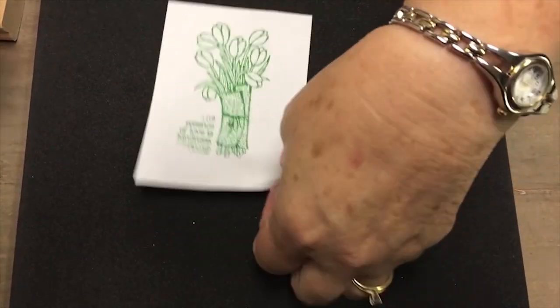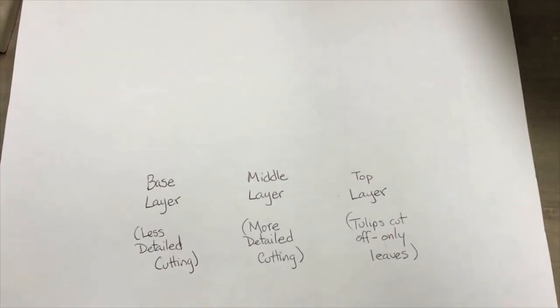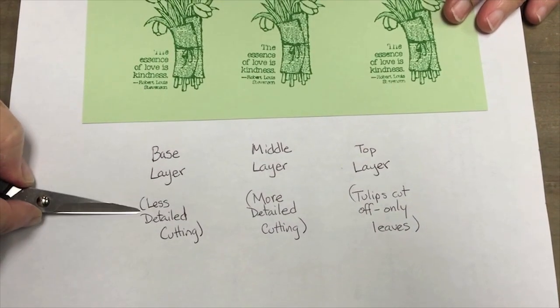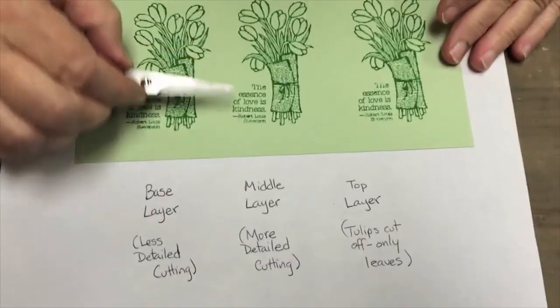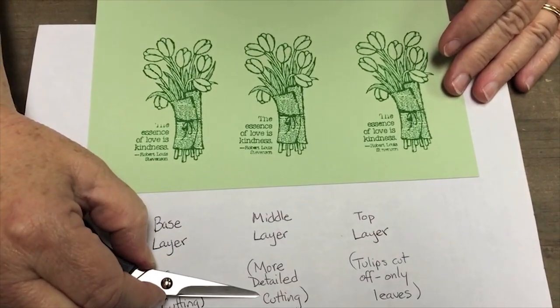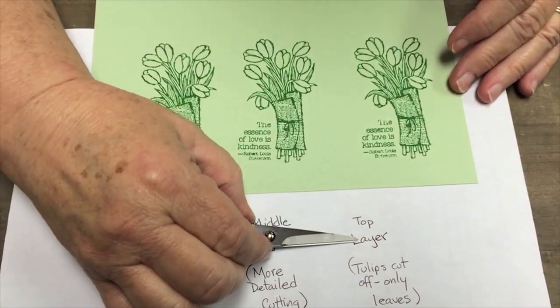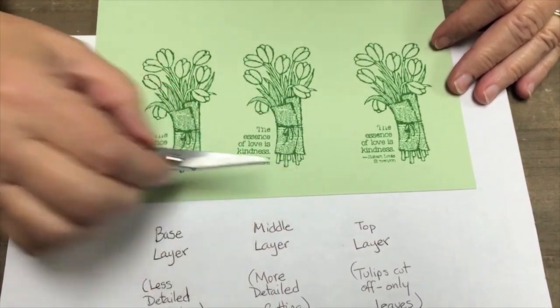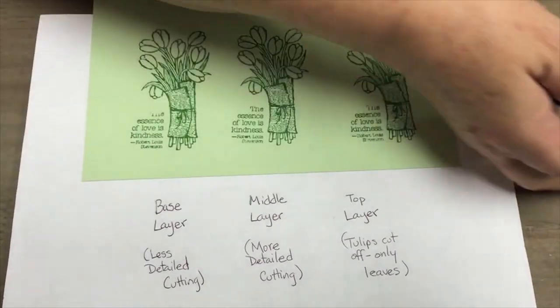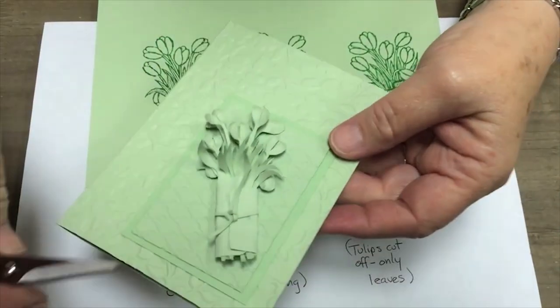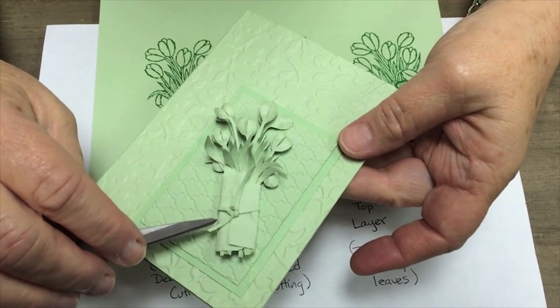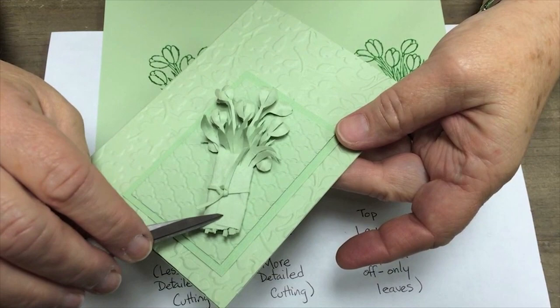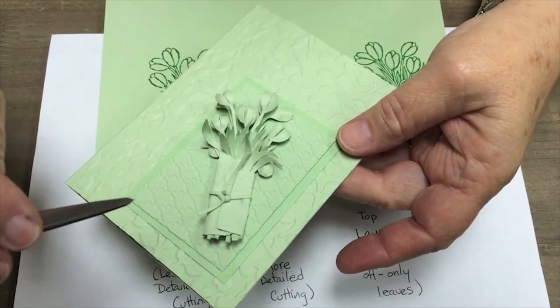Before we start cutting, we're going to need to understand what we're going to be cutting. We're going to have a base layer with less detailed cutting, and then we're going to have a middle layer that has more detailed cutting. And then for this top layer, I'm going to cut the tulips off and only have the leaves just to add texture to the finished product. And then if you'll notice on the finished product, the newspaper and the tie are what catches your eye. So they are going to be really focal points for doing some special techniques and we'll talk about those later.